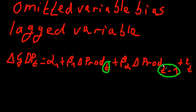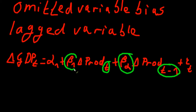Consider the interpretation of the coefficients — it's a ceteris paribus interpretation. We discuss an effect while holding all other effects constant. The effect of beta two is the effect of past productivity while holding the contemporaneous productivity effect constant.